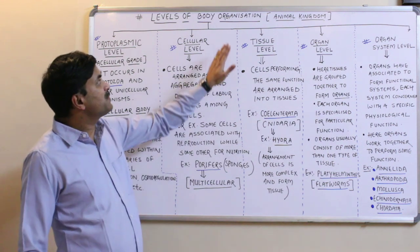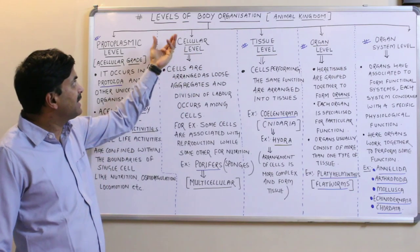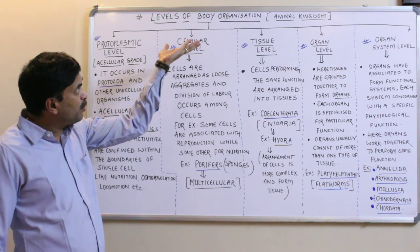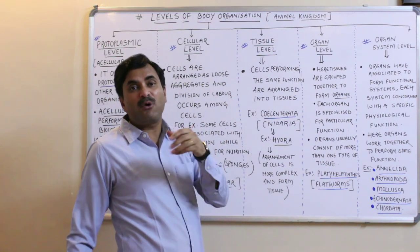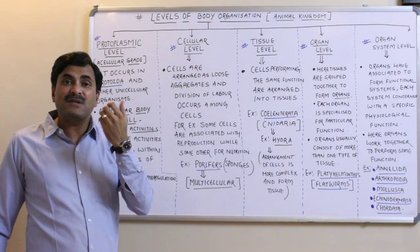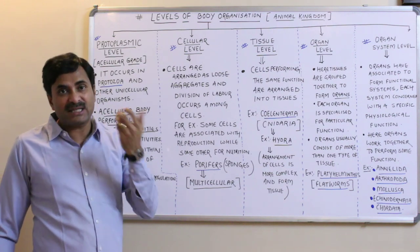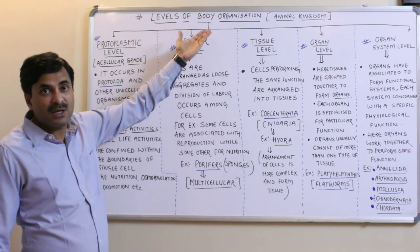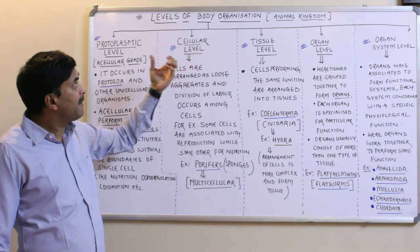Hello students, today we are going to study a general topic related to the animal kingdom, known as the levels of body organization. There are various bases of classification — we classify organisms based on the level of body organization, based on symmetry, based on segmentation, based on germ layers, etc. Today we are going to discuss the levels of body organization, which are found in different types of organisms.